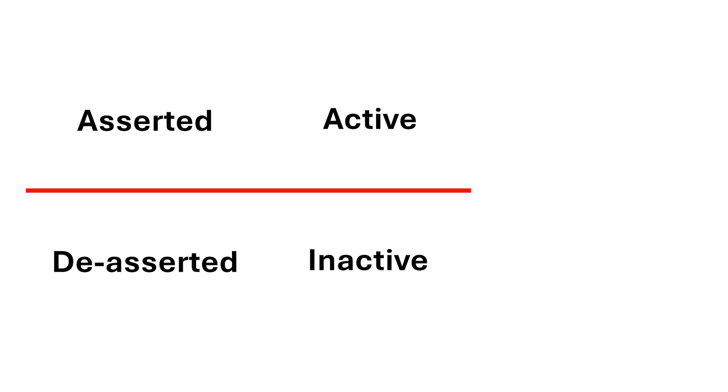For the signals we're using, asserted means true or one, while deasserted means zero or false. Now this isn't always the case. Sometimes it's actually the opposite. But for now, asserted means one and deasserted means zero.